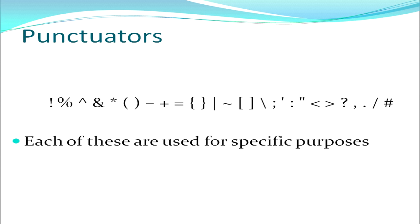Next, we move on to punctuators. Various special characters that you have on the keyboard are punctuators. Each and every character has got a specific purpose and you have to use it according to that purpose. For example, round brackets cannot be used in place of curly brackets and vice versa — although they are both brackets, they are used for specific purposes.